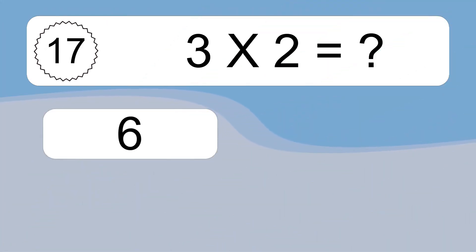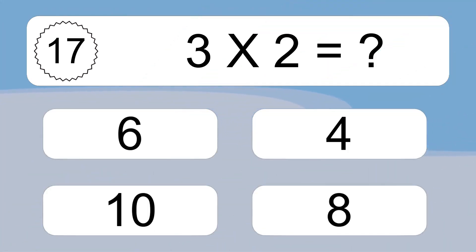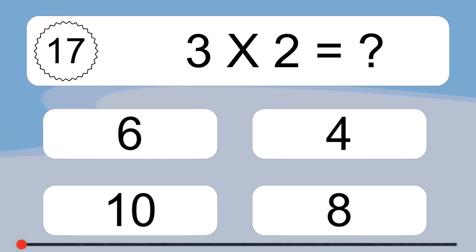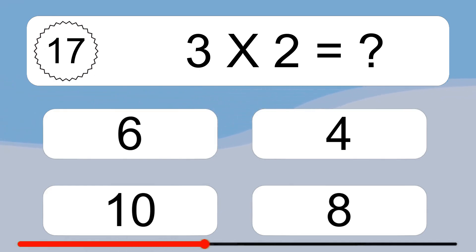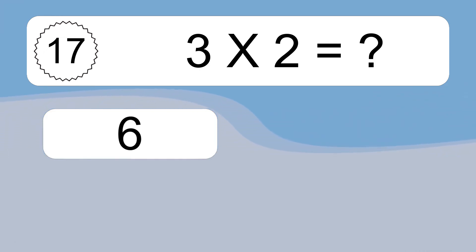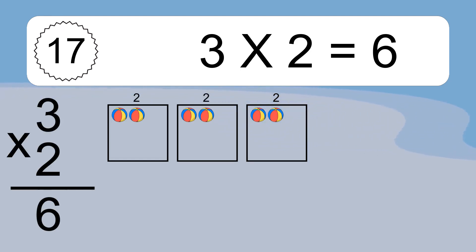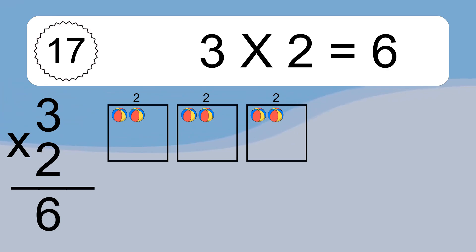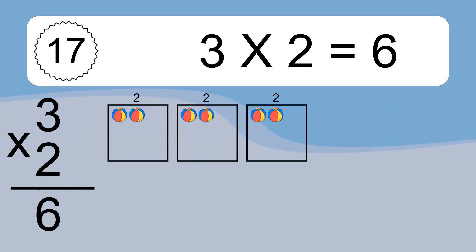3 times 2 equals what? 3 times 2 equals 6. We have 3 boxes, and each box has 2 colorful balls inside. If you count all the balls in all the boxes together, you will have 3 times 2 balls. This equals 6 balls.